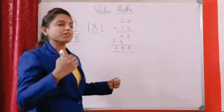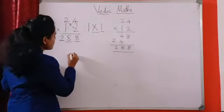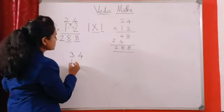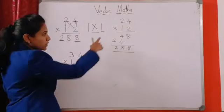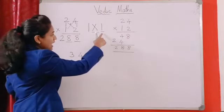Suppose if you get a 2 digit number what you should do. For example 34 into 13. Now how to multiply? I am going to use the I-X-I method.